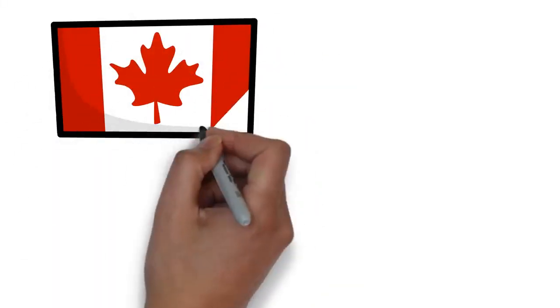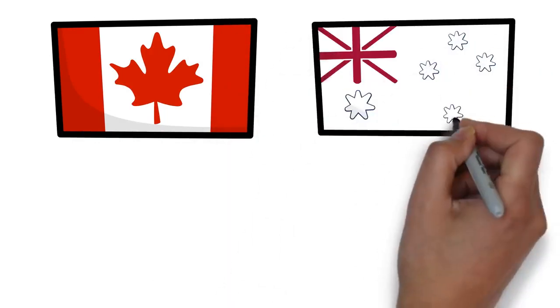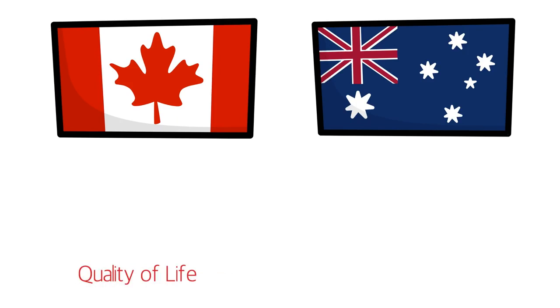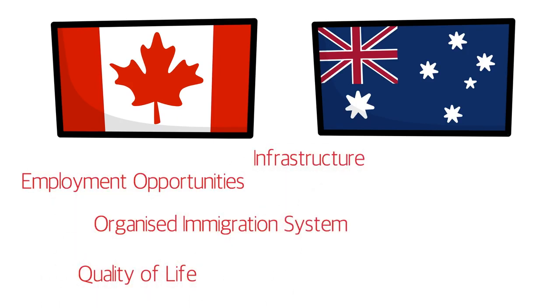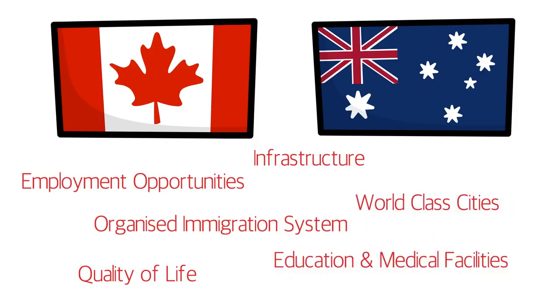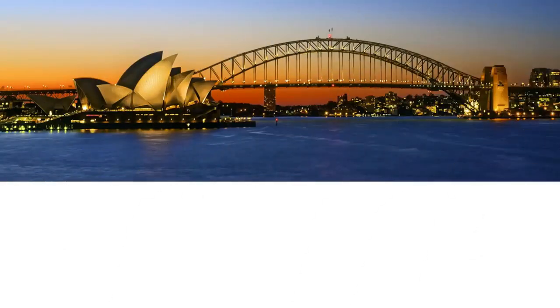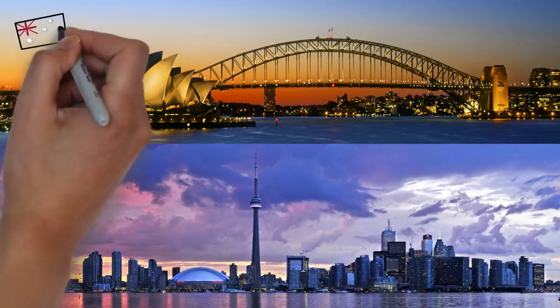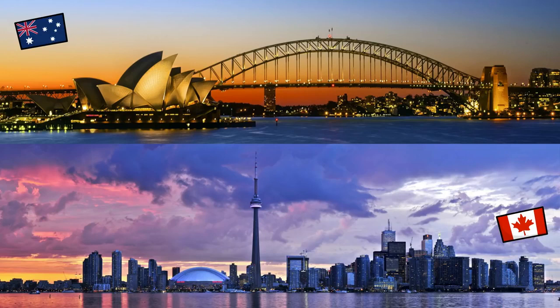Australia or Canada — which one should I choose to immigrate? This is probably the first question that comes to mind when we think of permanent residency and immigration from our home countries. In this video I'll tell you all the factors you should consider before taking this important decision. Both countries are great options; they are very similar in terms of quality of life, employment opportunities, organized immigration systems, infrastructure, education, and medical facilities.